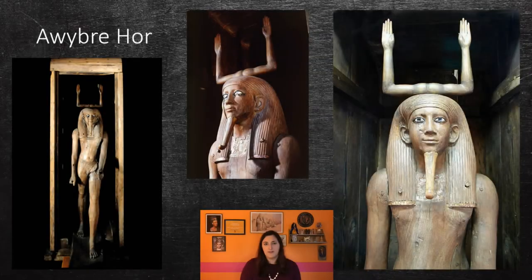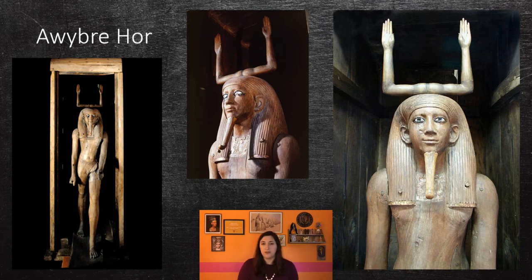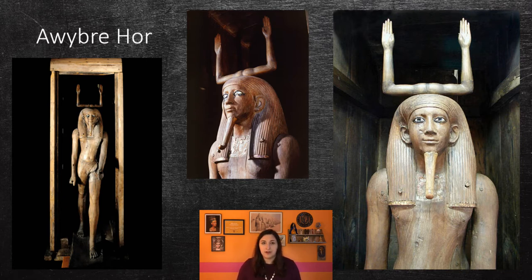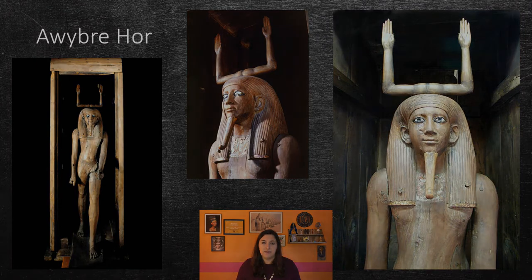The next pharaoh we're going to cover is Aubrey Hoare. He probably only ruled for a few years, and maybe even only a few months. He is mostly known from his intact tomb, where a wooden statue of him was found. This statue was life-size and was found within a wooden shrine. What is very intriguing about this statue is the hieroglyph for Ka, which stands upon his head. The Ka arms indicate that this was a vessel for the pharaoh's Ka to reside in in the afterlife.